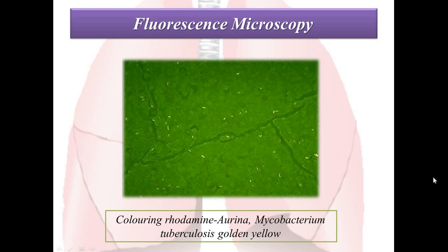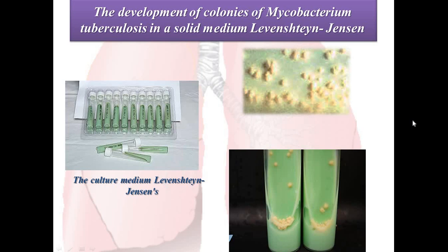This is fluorescence microscopy, where Mycobacterium tuberculosis stains golden-yellow. You can also see the development of colonies of Mycobacterium tuberculosis on solid medium — the Löwenstein-Jensen medium — with the characteristic colony morphology.